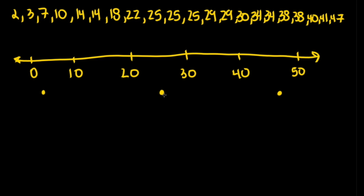Now all that is left is to find the first quartile and the third quartile. The median of the lower half of the data is called the first quartile, and the median of the upper half is called the third quartile. Our lower quartile includes the numbers from 2 to 25, and our upper quartile includes numbers from 25 to 47. From 2 to 25 there are 11 numbers, so the median is the sixth number, which is 14 — that's our first quartile. For the third quartile, counting six numbers in from the top, that number is 34.